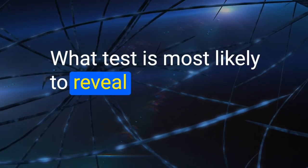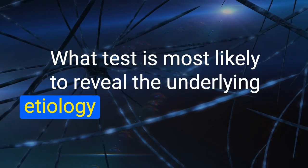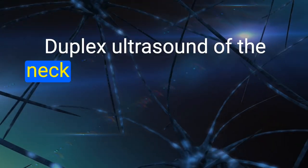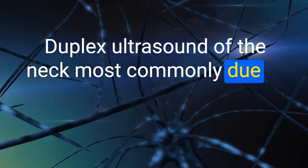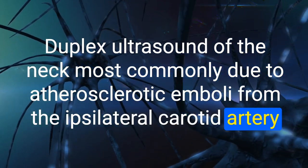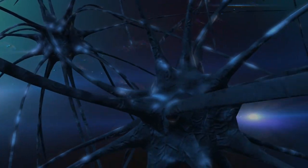97. What test is most likely to reveal the underlying etiology of amaurosis fugax? Duplex ultrasound of the neck — most commonly due to atherosclerotic emboli from the ipsilateral carotid artery.